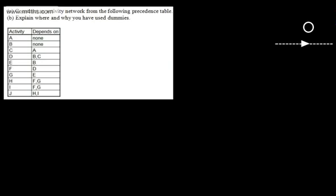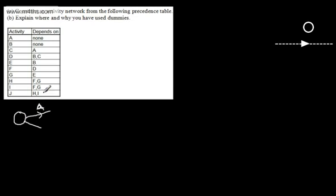So let's look at the first question. Part A says construct an activity network from the following presence table. We've got activities A to J and we're told what each depends on. A and B depend on nothing, C depends on A, D depends on B and C, and so on. It's easier to sketch them first and then go back and do a more accurate, pretty picture. We always start with what we call the source node — this is where we begin — and we branch off the activities from it.